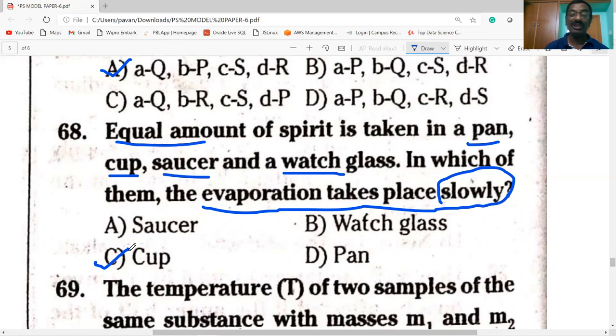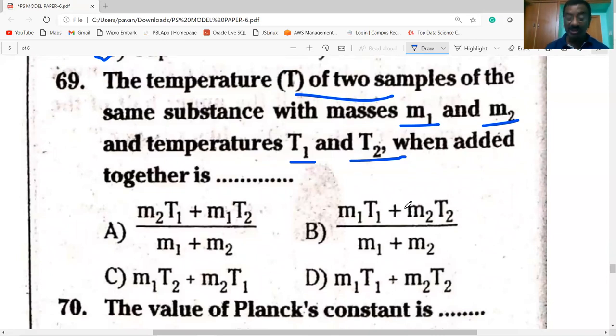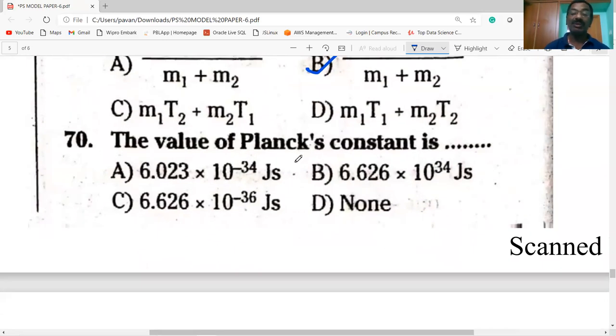Two samples of the same substance with masses M1 and M2 and temperatures T1 and T2 when added together, the method of mixtures gives T equals M1T1 plus M2T2 by M1 plus M2. Option B. The value of Planck's constant is 6.626 into 10 power minus 34 joule seconds, not 10 power minus 27 erg seconds.